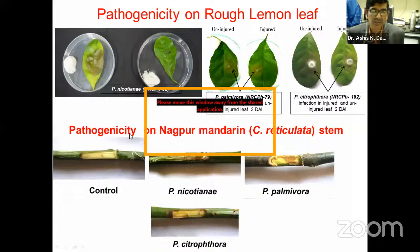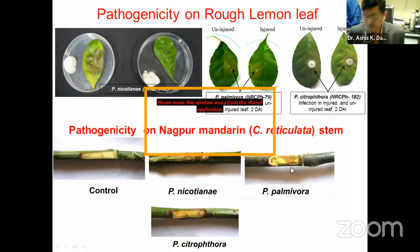In this pathogenicity test, we also conducted tests on Nagpur mandarin stem. You can see here the typical brown lesion which is caused in the different stem portions of our citrus species.